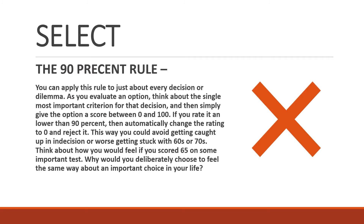The fifth and last part of Explore is the 90% rule. You can apply this rule to absolutely every decision or dilemma you have. If you have two options, give a rating from zero to 100 to each option. If either option gets anything less than 90, automatically make it zero and reject it. This way, you avoid getting caught up in indecision or getting stuck with 60s or 70s — just mediocre. Think about how you would feel if you scored 65 on an important test. Why would you deliberately choose to feel the same way about an important choice in your life?